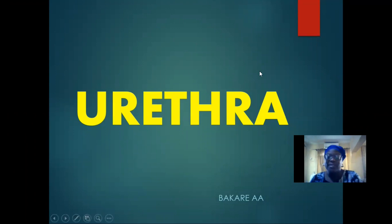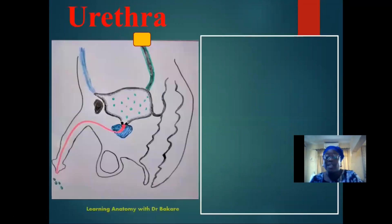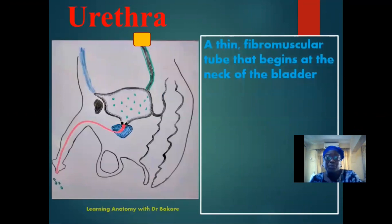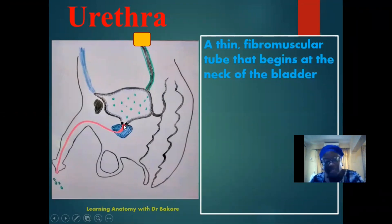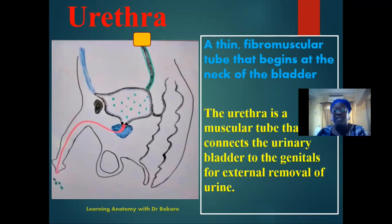Welcome. Let's relax and enjoy this video. Let's look at the urethra. The urethra is a fibromuscular tube that begins at the neck of the urinary bladder. This is the urinary bladder, where urine is stored until it is filled to capacity and when the time is ready for it to be released, it passes through the urethra to the external environment.